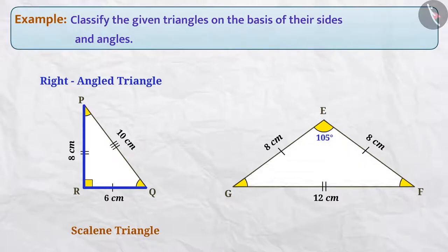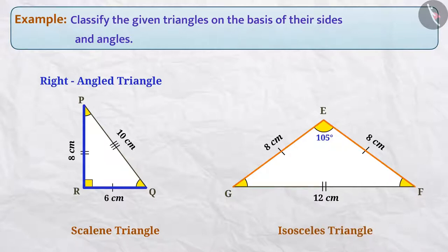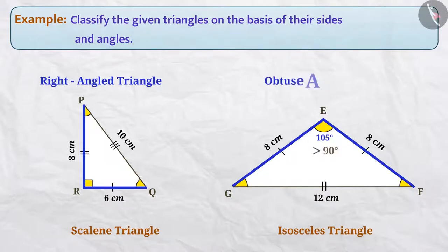Seeing the figure of triangle EFG, we find that the two sides of this triangle are equal, so it is an isosceles triangle. Since one of its angles, angle GEF, is greater than 90 degrees, hence it is an obtuse angle. Therefore, it is an obtuse angled triangle.